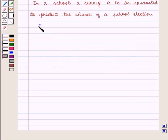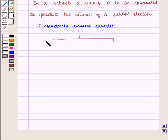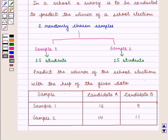Suppose two randomly chosen samples are there. We shall name it as sample 1 and sample 2. And there are 25 students in each of the sample. They are asked to predict the winner of the school elections with the help of the given data.